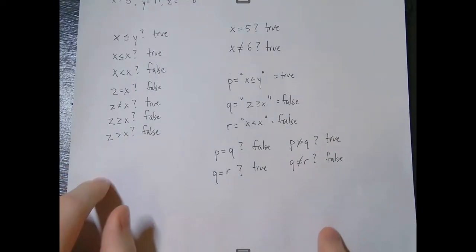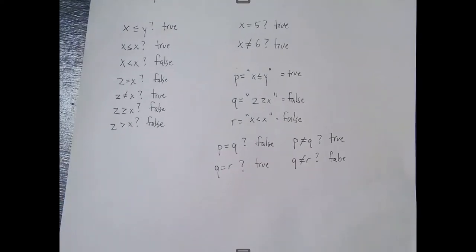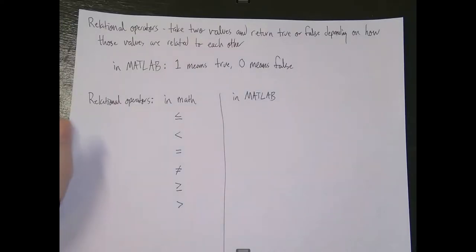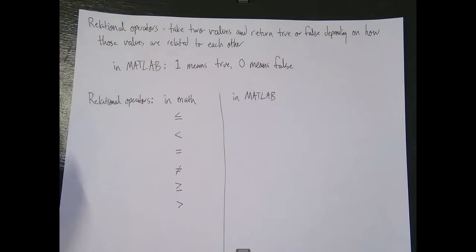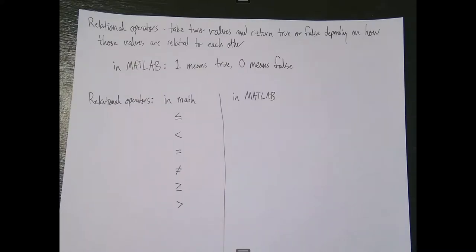All of these provide a really good basis for what we call relational operators. Relational operators take two values and return true or false depending on how those values are related to each other. By values, you can consider that as just being numbers or characters — individual characters such as the letter A or the exclamation mark — not an entire string, but rather the one-letter elements you see in a character array or string.